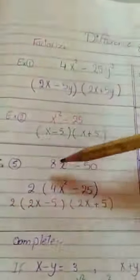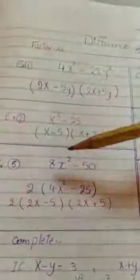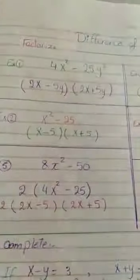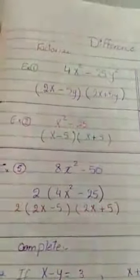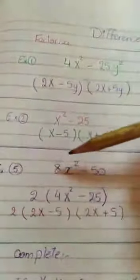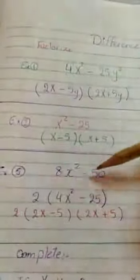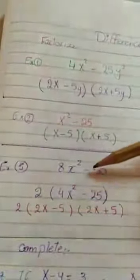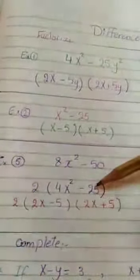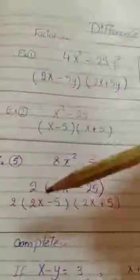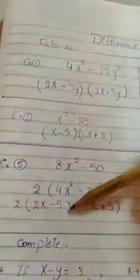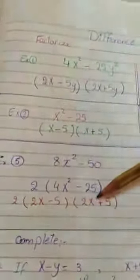Number 5, 8x squared minus 50. In this example, 8 has no square root. First, I'm going to take the common factor of those two terms. They are both divisible by 2, so 2 outside the bracket. 8 divided by 2, 4x squared, minus 50 divided by 2 equals 25. Write the two, then take root the first, would be 2x minus 5 in a bracket, and the other bracket, 2x plus 5.